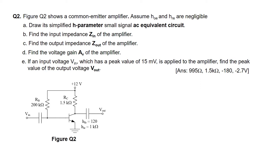For part B, we are supposed to find the input impedance Z-in of the amplifier. Part C is to find the output impedance Z-out of the amplifier. Part D is to find the voltage gain AV of the amplifier. For parts B, C, and D, we will need to draw the simplified H-parameter model first. For part E, the last one, we are given a voltage V-in which has a peak value of 15 millivolts applied to this amplifier, and we are supposed to find out what the output voltage is.